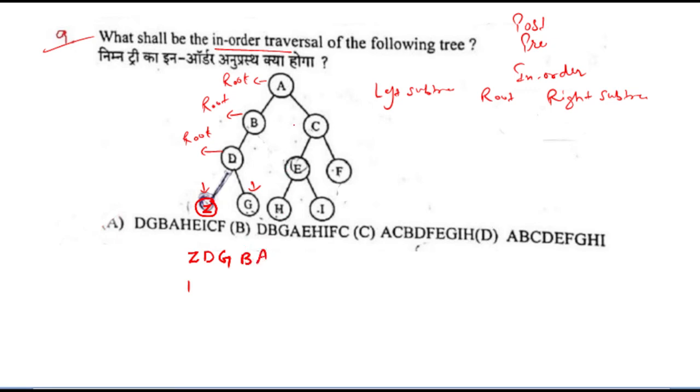After we have moved here, we are on the right side. Here this root, we will traverse, then E, then H, then E, because E here is root node, then right I.